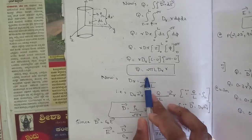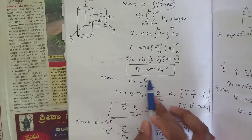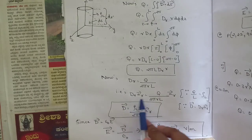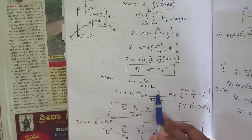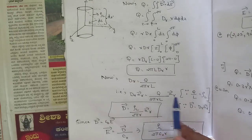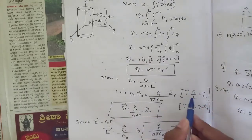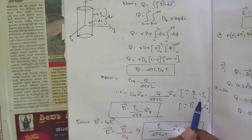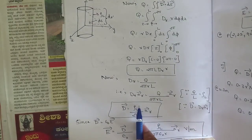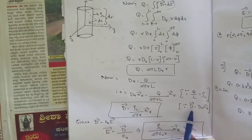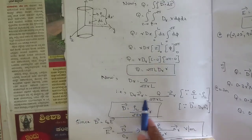Rearranging, Dr equals Q divided by 2πrL. Writing the vector form: Dr âr equals Q divided by 2πrL âr. Since Q divided by L equals ρl by definition (ρl = ΔQ/ΔL), we substitute Q/L with ρl.